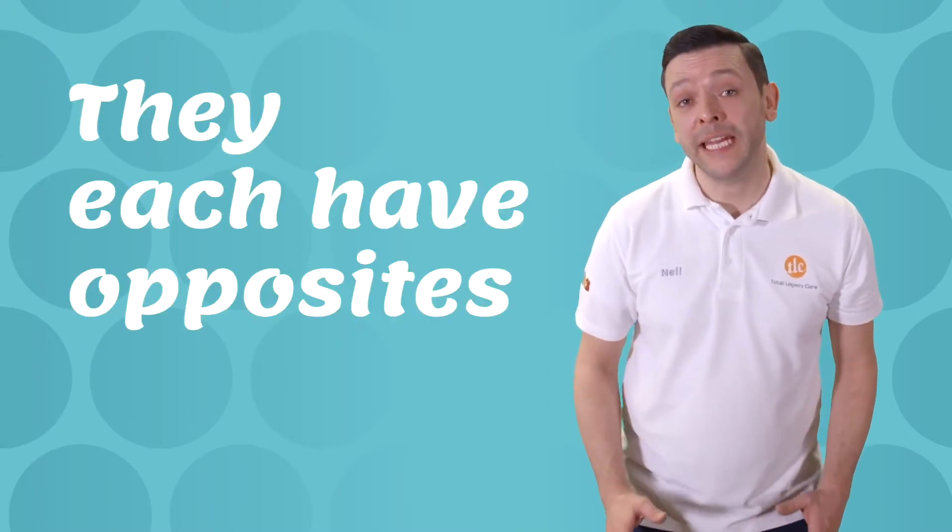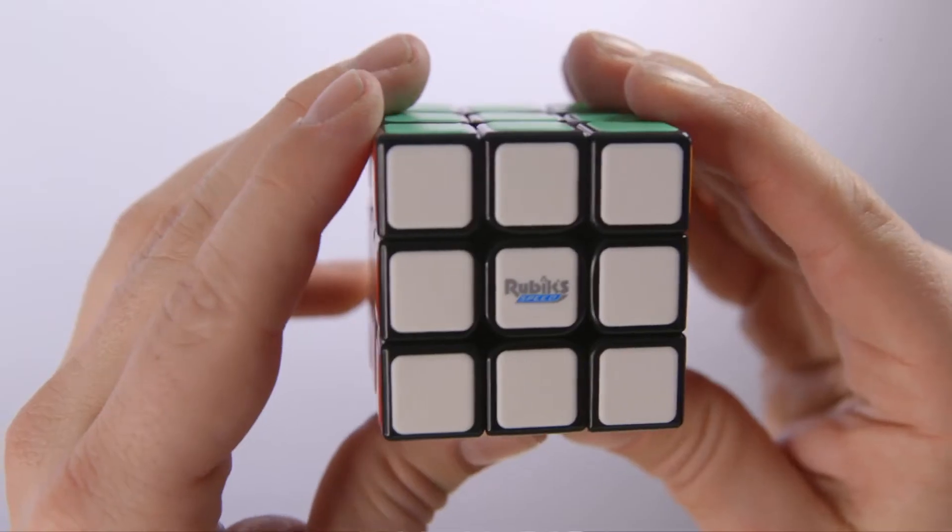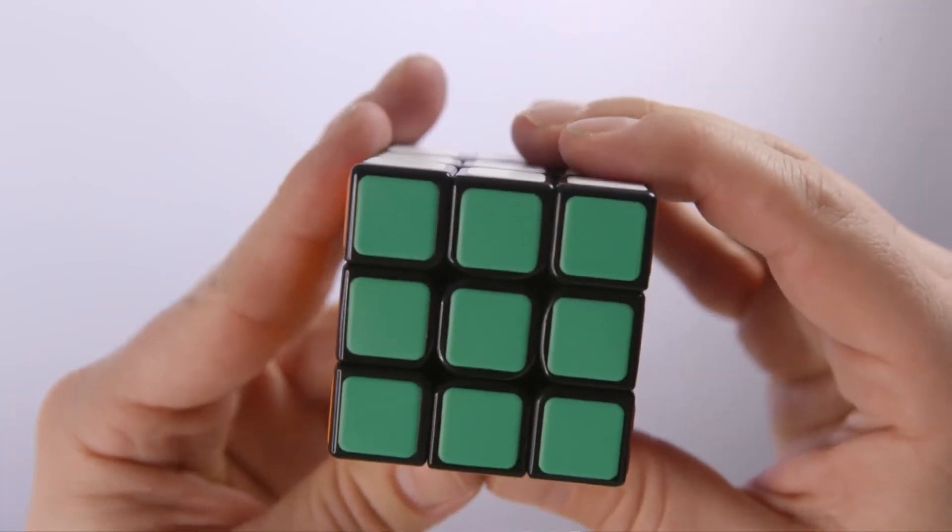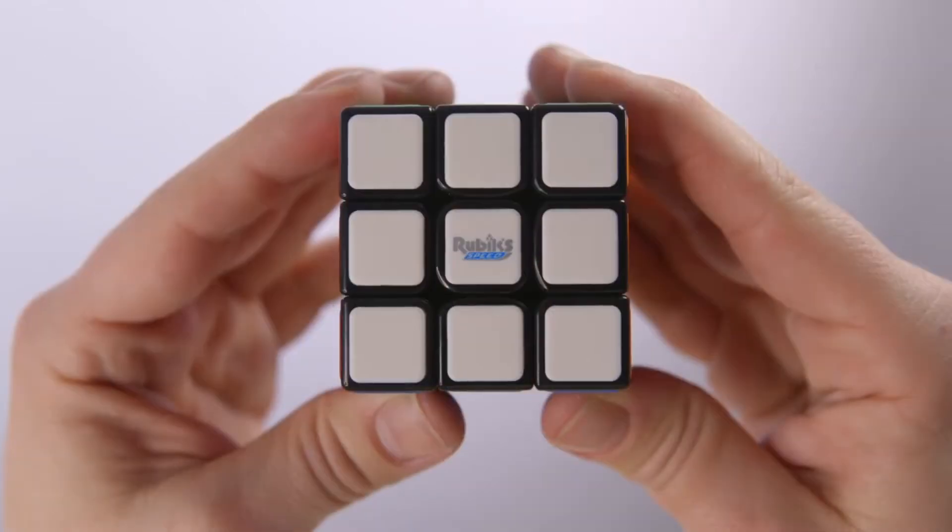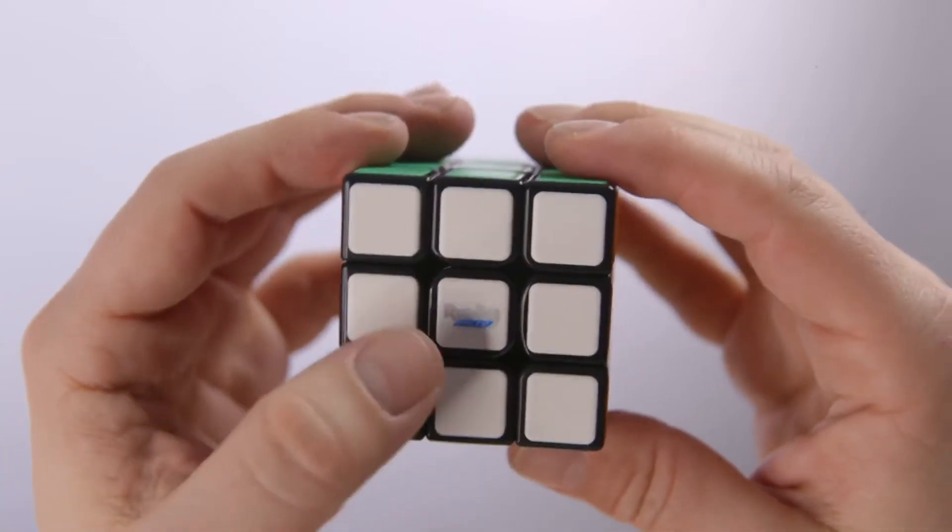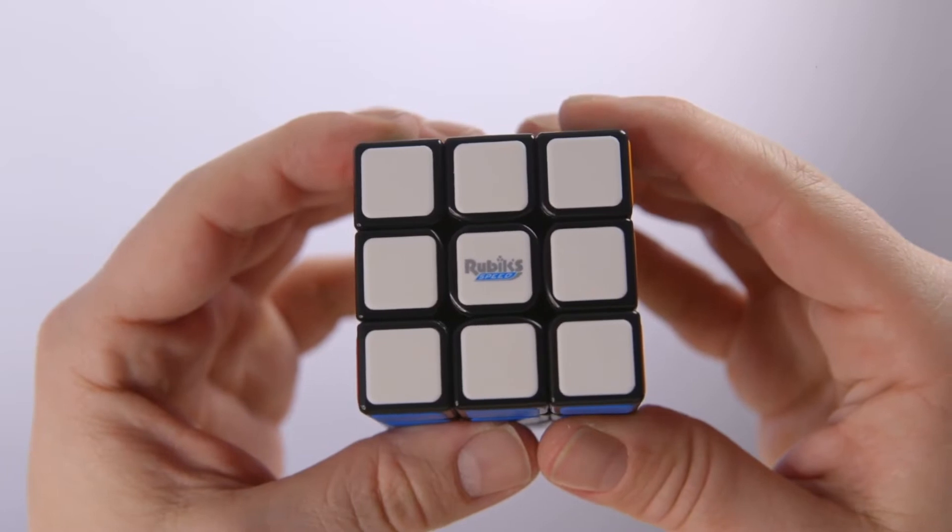This is important because they each have opposites. The white is always opposite to yellow. The blue and green are opposite, and so is the red and orange. To know which side is a certain color is easy. Look at the center piece.